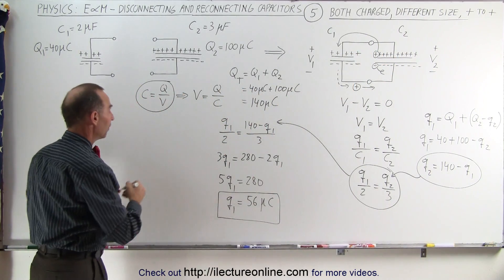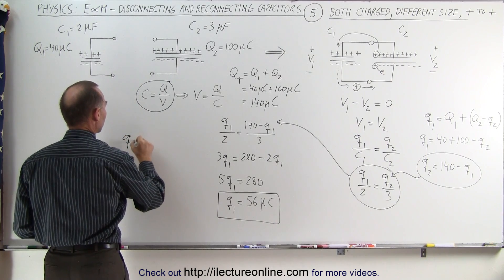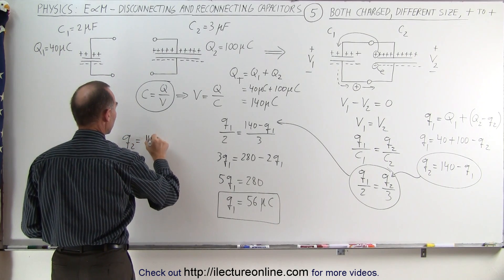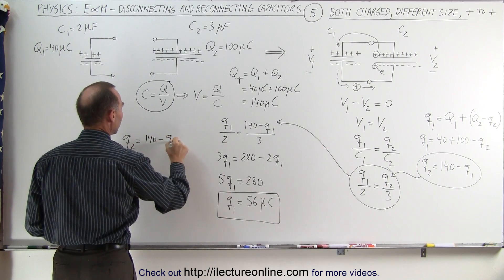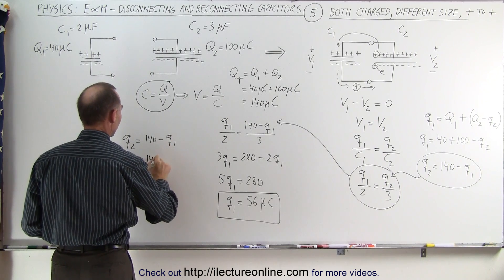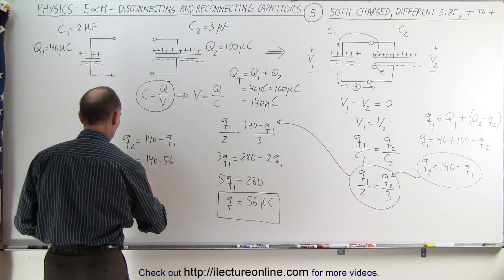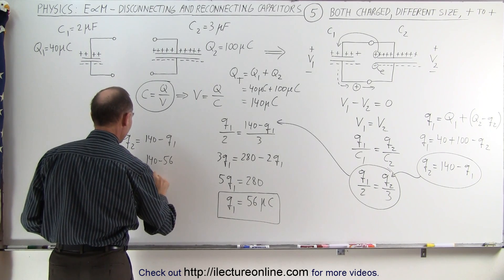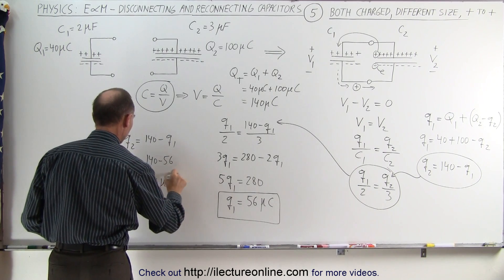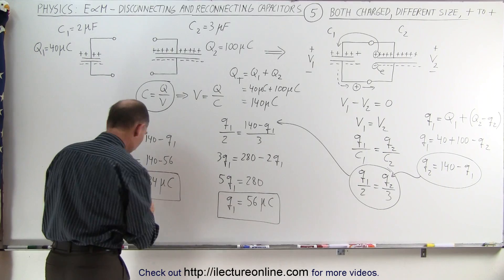Now, of course, we can calculate q2. q2, which is equal to 140, minus q1, which now becomes 140 minus 56, or q2 is equal to 84 microcoulombs. And there is the solution we're looking for.